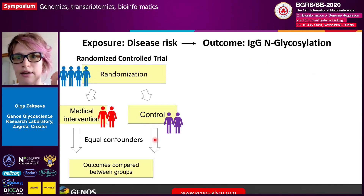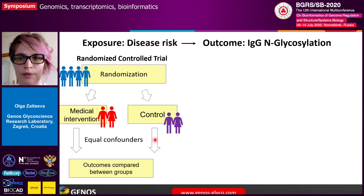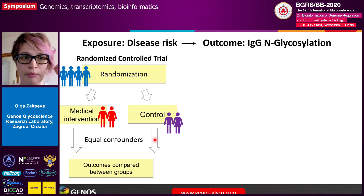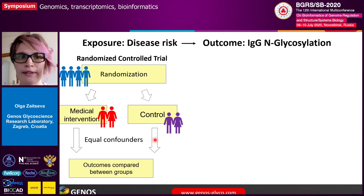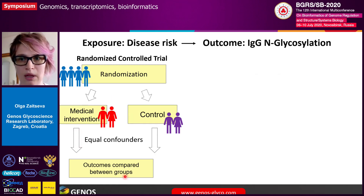Classically, how would one address the question of establishing causal relationships between two factors? The golden standard would be to conduct a randomized control trial. You would recruit subjects, separate them into two groups randomly — one group receives an intervention, the other does not. This randomized assignment ensures equality of confounders between the two groups, and then comparing outcomes allows us to attribute all observed changes to that specific intervention.